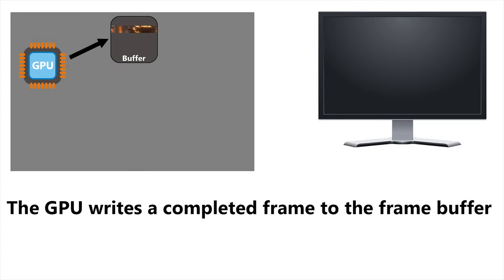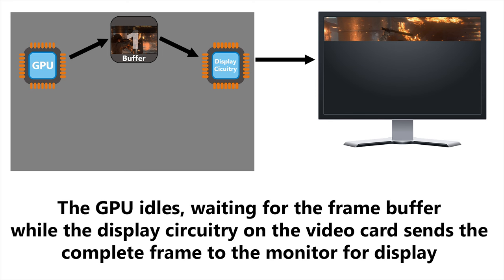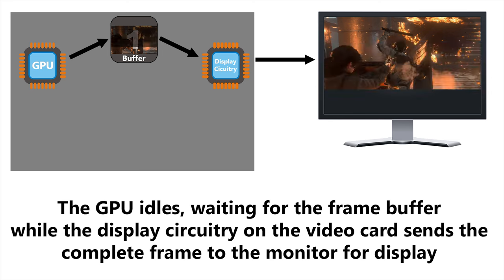Your GPU has a reserved piece of its video memory that it uses to store the finished frame that it wants to send to the monitor. This is called the frame buffer. After doing all its 3D calculations and so on, it puts the completed frame into that frame buffer. The display circuitry on your graphics card then sends the image up to the monitor for display. But there's a problem here: the frame buffer is busy being read by the display circuitry, so the GPU can't write into it.